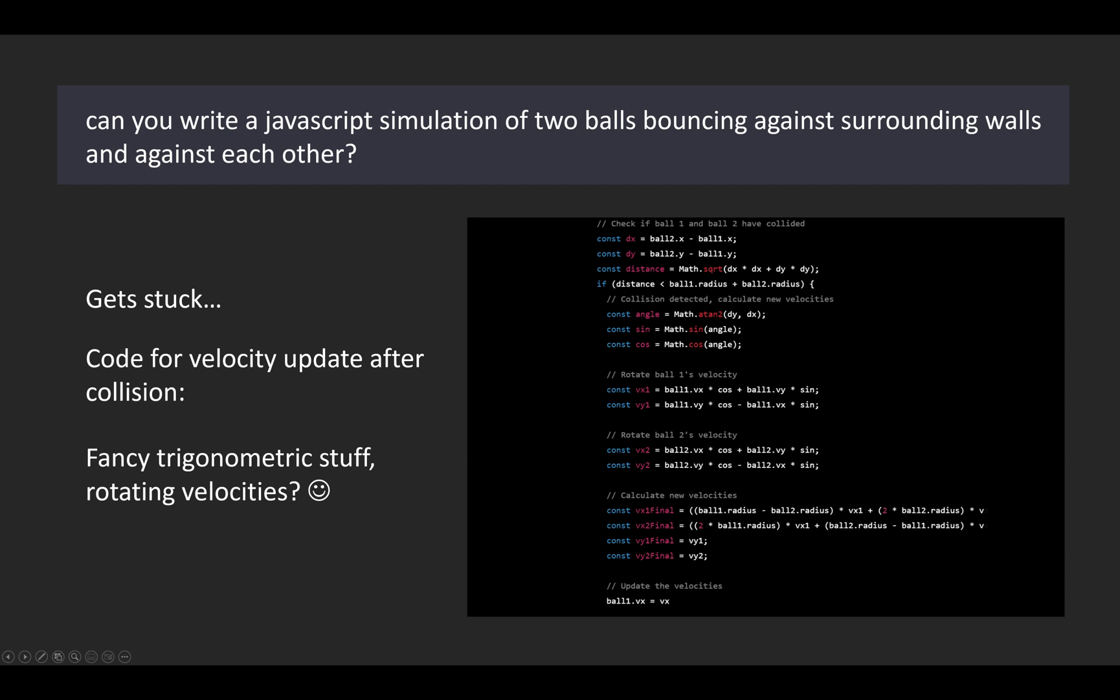I did get some code to handle collisions between two balls. However, this looks a little bit weird to me. It uses trigonometric functions which is not necessary. And I also don't know what it means by rotating velocities. I haven't tried this. I think it would be interesting to see what happens.